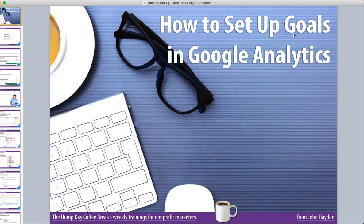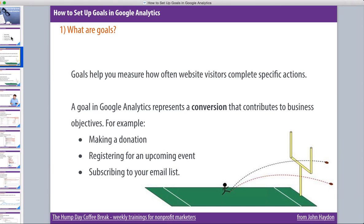Welcome to Hump Day Coffee Break, every Wednesday at 11 o'clock. Today we're going to talk about setting up goals in Google Analytics. The agenda covers what goals are, why they matter, setting up your first goal, and finally creating goal alerts — alerts you can get when a goal has been exceeded or achieved. You can get emails and text messages about your goals.